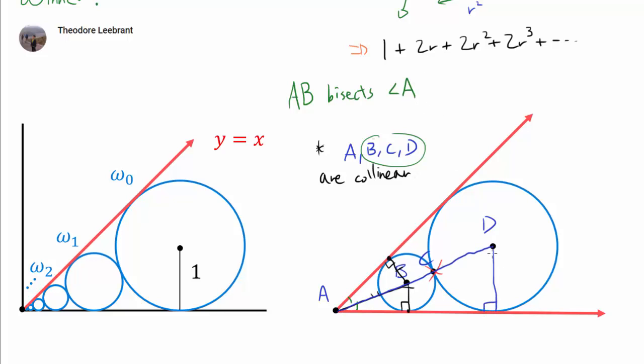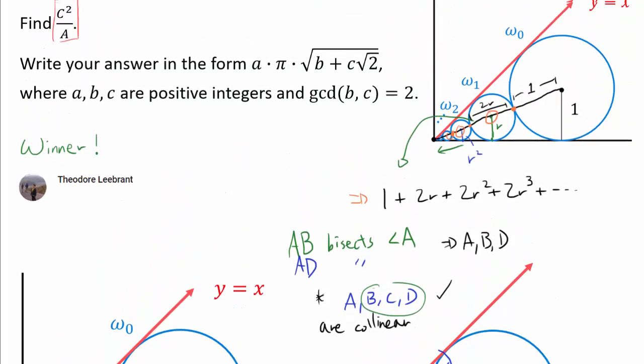We can drop down two perpendiculars and proceed in the same way. And that's going to show AD bisects angle A as well. And of course, this shows that A, B, and D are collinear. And since BC and D are collinear and AB and D are collinear, we have shown that A, B, C, and D are collinear.